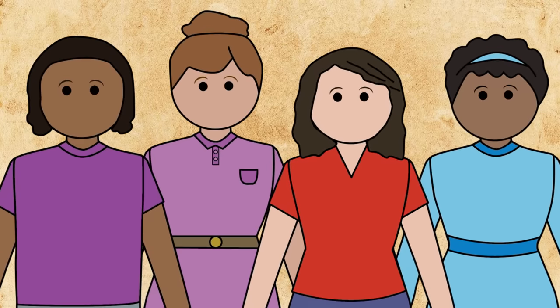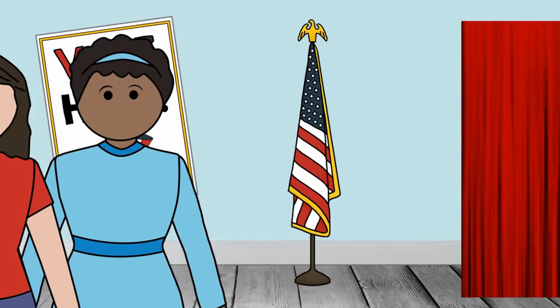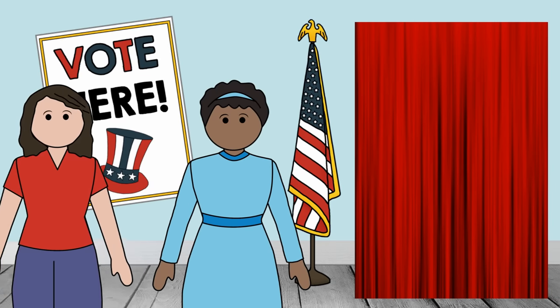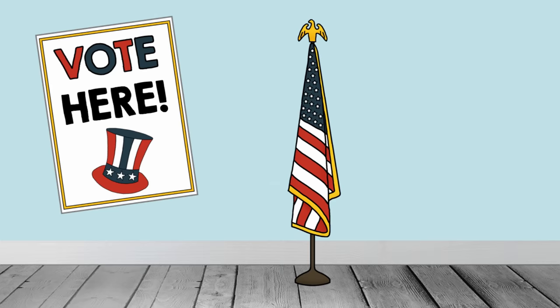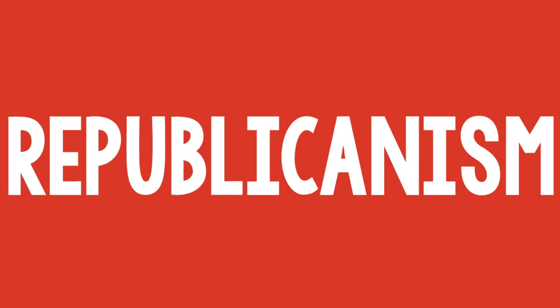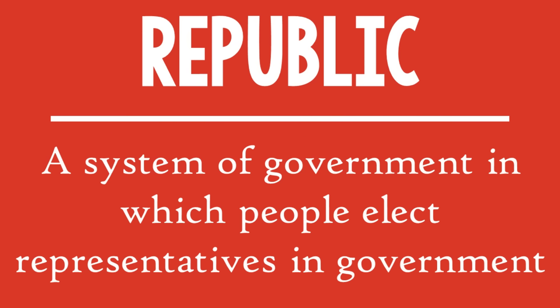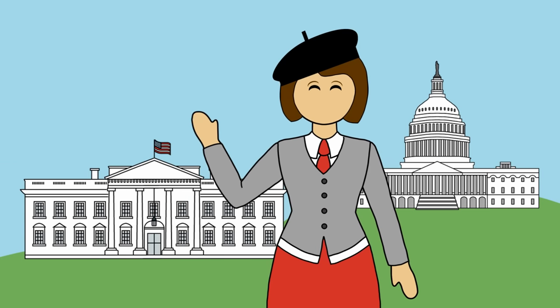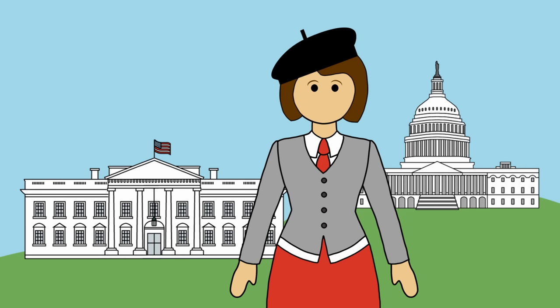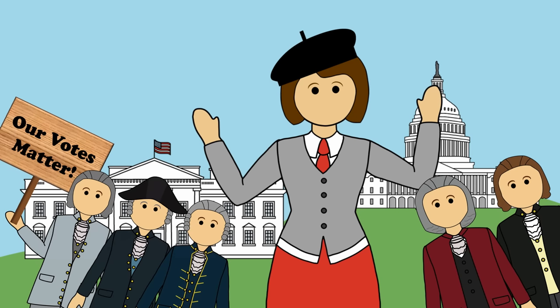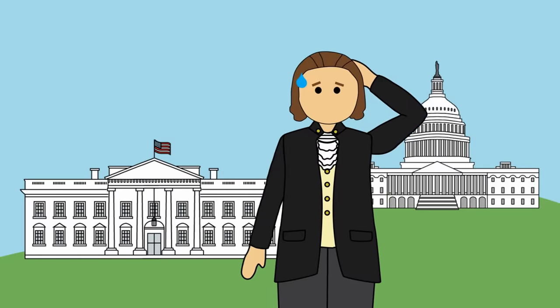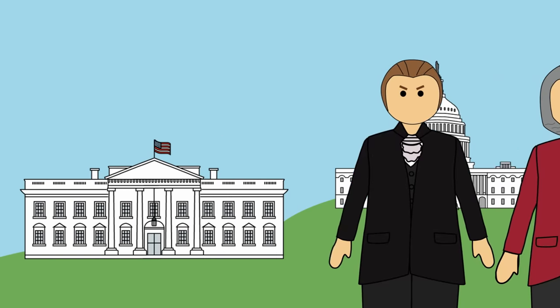An example of people giving the government power today is through voting. The United States is a democracy. In a democracy, people elect representatives to make decisions on their behalf in government. This brings us to the next principle: Republicanism. In a republic, people elect representatives to make decisions in government. The United States can be called a representative democracy or a republic. This idea was important to the American colonists because they wanted the people to have the power to choose their own government officials and remove them or choose new leaders in future elections if they weren't following the will of the people.